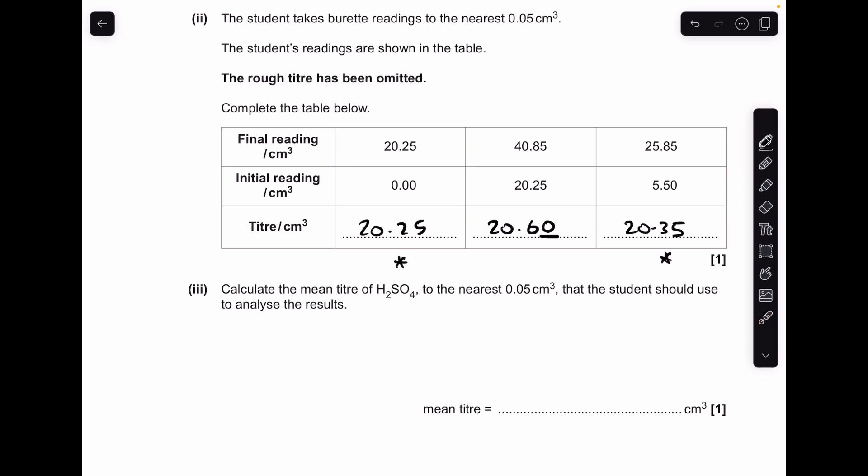In terms of the mean titre, you can see I've starred the first one and the last one. They are concordant—they are within 0.1 cm³ of each other—so you would take the mean of those two, which is obviously 20.30.